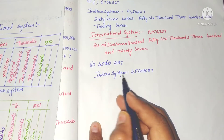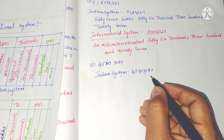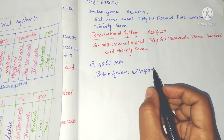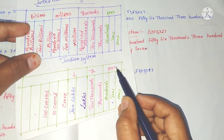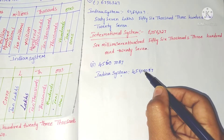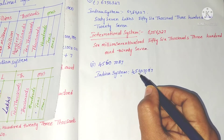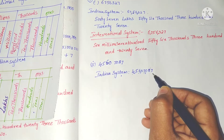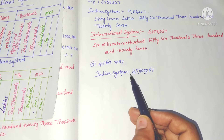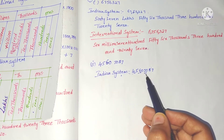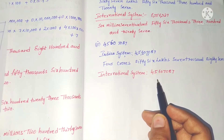The second number in the Indian system: we place the first comma after three digits from the right, then after every two digits. The place values go up through ones, tens, hundred, thousand, ten thousand, lakh, ten lakh, crore. There are four periods. So the number is: 4 crores, 56,007,087.